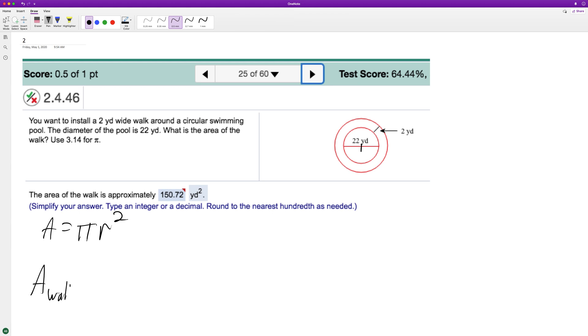Area of walkway is going to be equal to 13 squared times π, and they asked to use 3.14 here, minus...